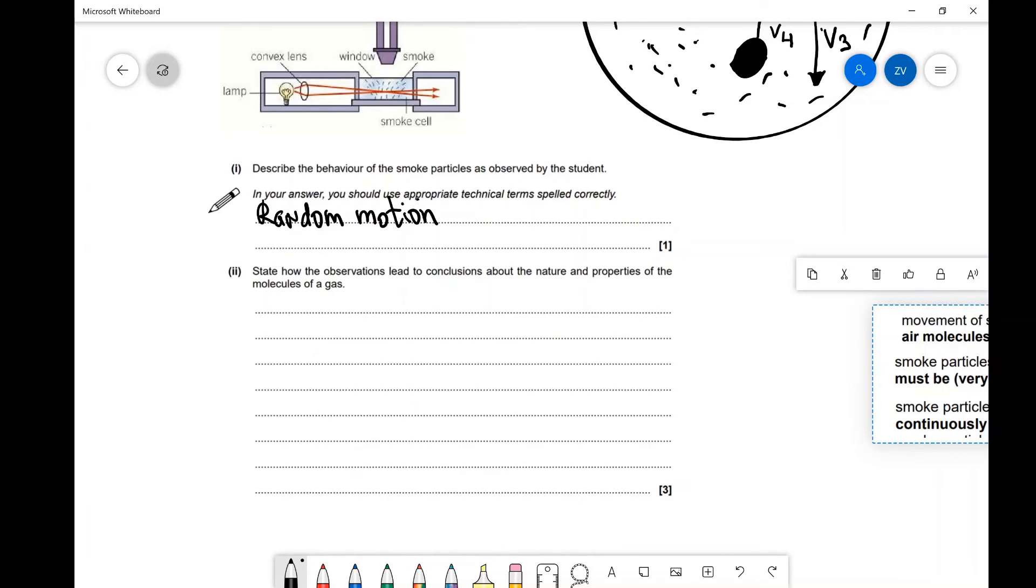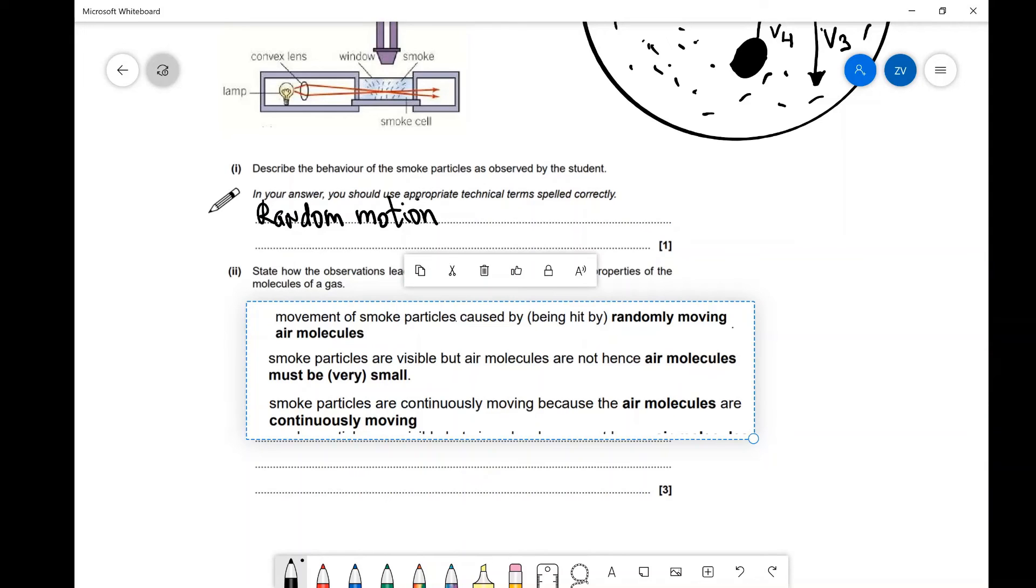In this case, I've pre-prepared some of the answers. So, I'm just going to slide them across here. And we can see that we always have a cause and effect. For example, the movement of the smoke particles is caused by randomly moving air molecules.